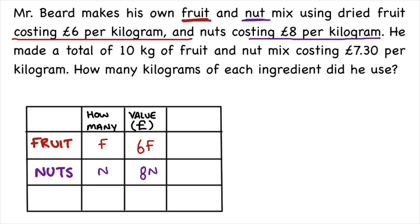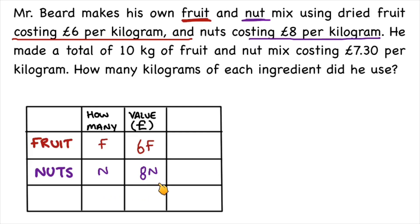For nuts, we can do the same thing. N can represent the nuts — N represents how many kilograms, the quantity of kilograms of nuts. For the value amount, we know that it costs £8 per kg for nuts, so that's going to be 8 times N. So N is the amount of kilograms and 8N is the value for that amount of kilograms.